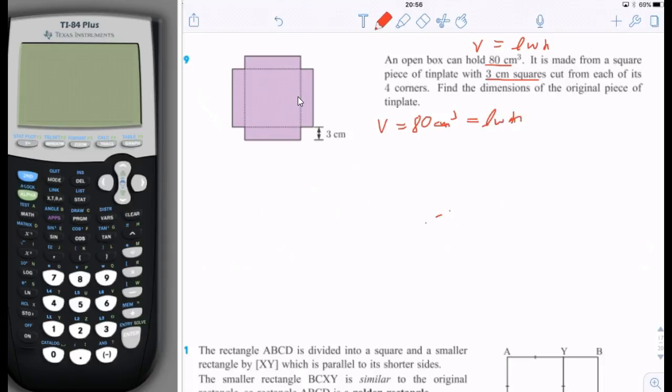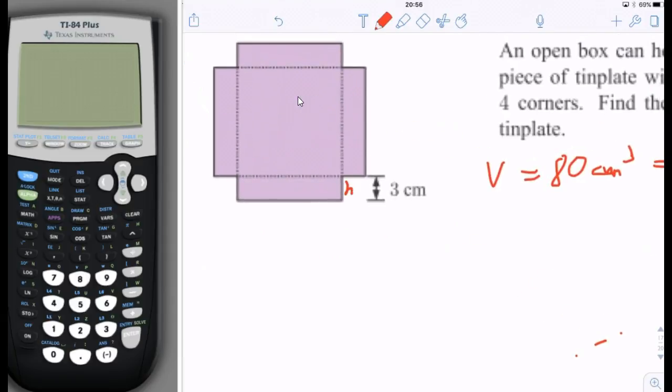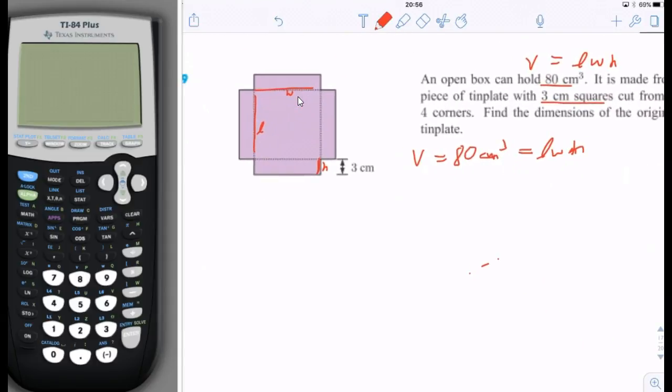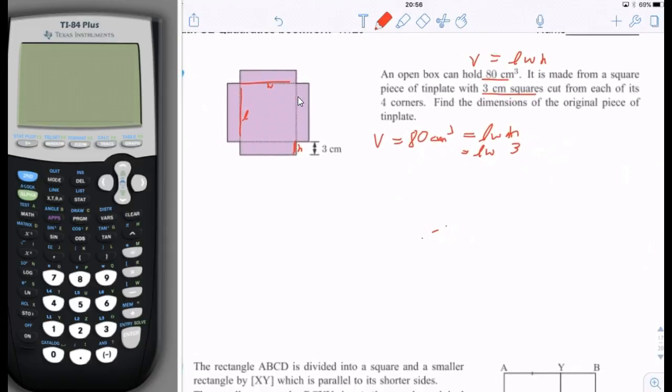We're going to write that here, length times width times height. If we label these dimensions on this drawing, the height is the part that's folded up, the width is this here, and the length is this here. Those are the three dimensions. We already know that the height dimension H is 3. Now length and width, we don't quite know what it is yet.